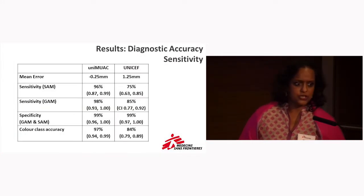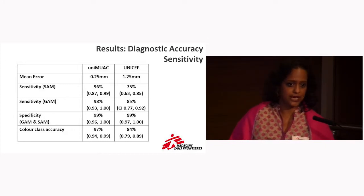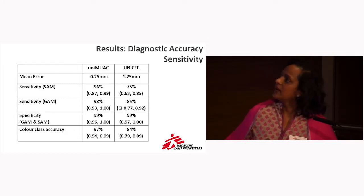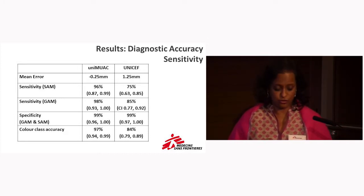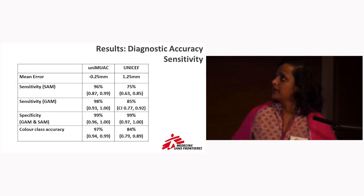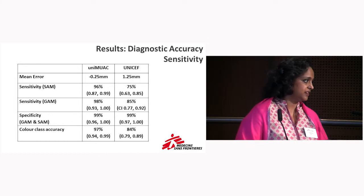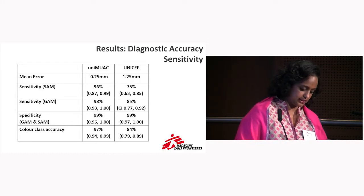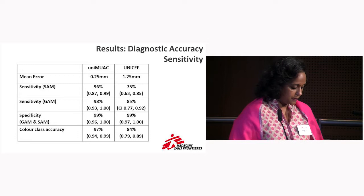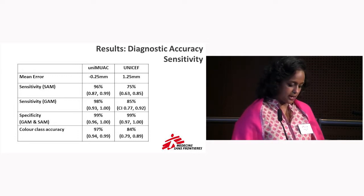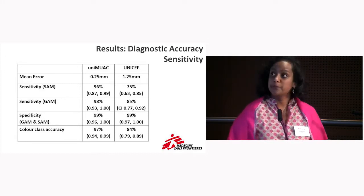Going back to how we traditionally talk about measurement errors: the measurement bias caused by the UNICEF and uni-MUAC not accounting for strip thickness means that the uni-MUAC has a much higher sensitivity — the rate of identifying true cases — compared to the UNICEF strap: 96% compared to 75% for severe acute malnutrition, and 98% to 85% across both malnutrition classes. The specificity, the ability to rule out, was similar across both straps. Precision was also the same for both straps when looking at the data within the 95% limits of agreement under the Bland-Altman method.